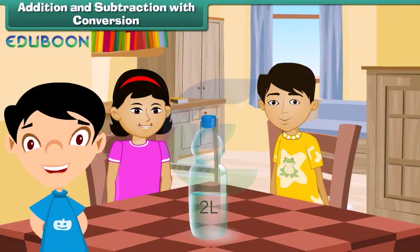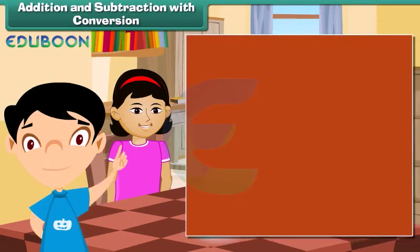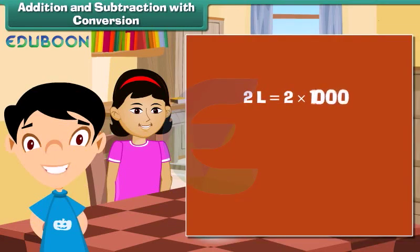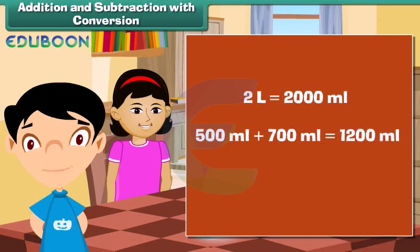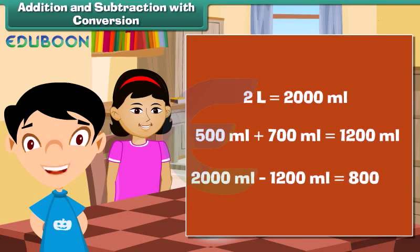Addition and subtraction with conversion. Soha's water bottle holds 2 liters of water. Soha drank 500 milliliters of water, and her friend Govind drank 700 milliliters. Let's find out how much water is left in Soha's bottle. Total water in the bottle is 2 liters, which equals 2000 milliliters. Total water consumed is 500 milliliters plus 700 milliliters, which equals 1200 milliliters. Water left in the bottle is 2000 milliliters minus 1200 milliliters, which equals 800 milliliters.